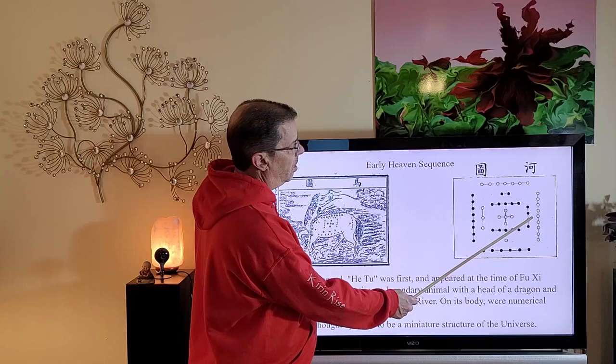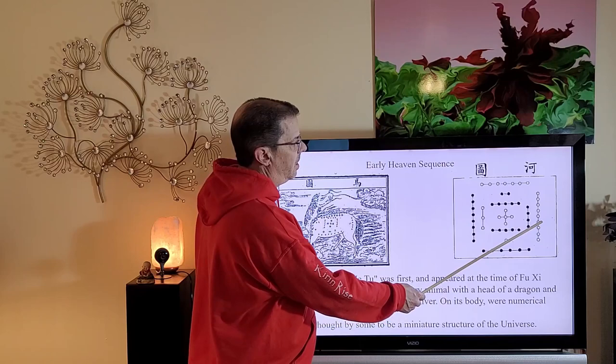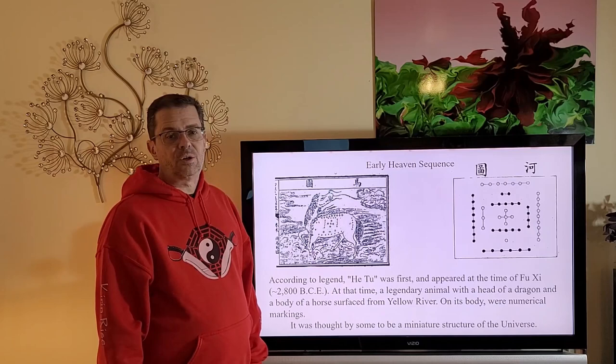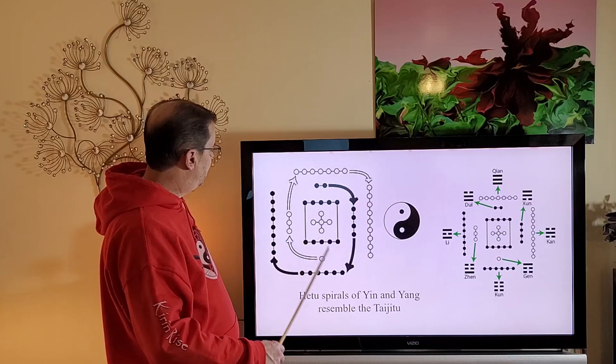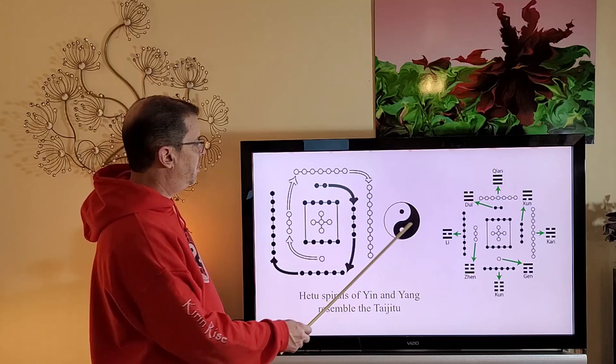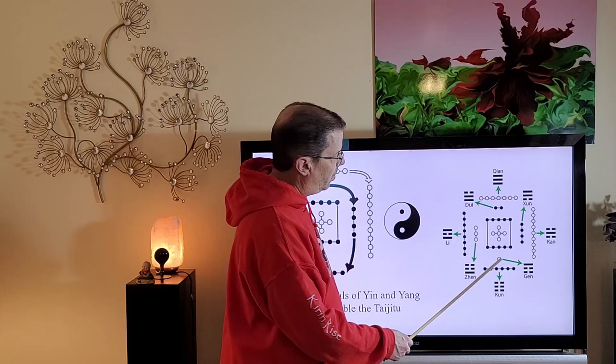One, two, three, four, five in the center, six, seven, eight, and nine. The He Tu is thought to be a miniature structure of the universe. You can see how the spirals of Yang and Yin resemble the Taiji II. How the Yin spirals out and Yang spirals out resembling the Taiji II. You can also see the placement of the symbols given the location in the He Tu diagram.